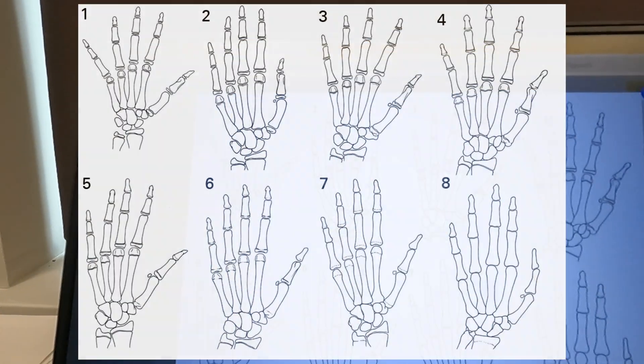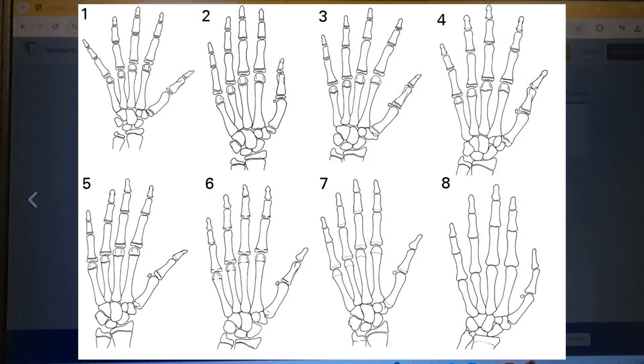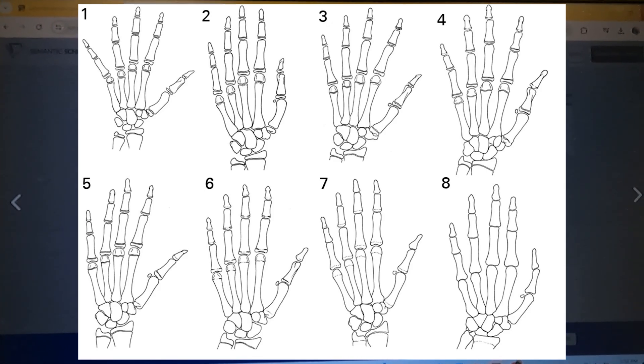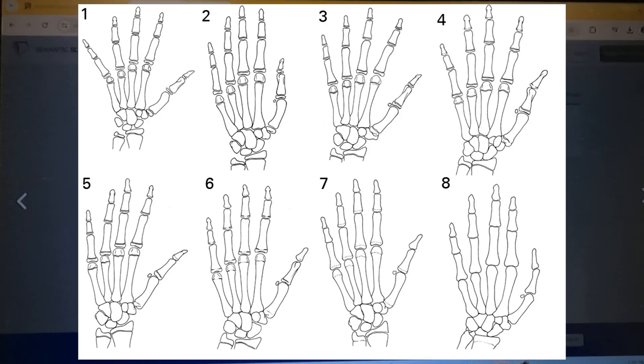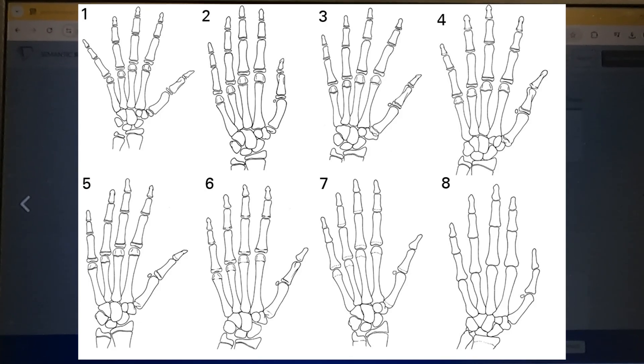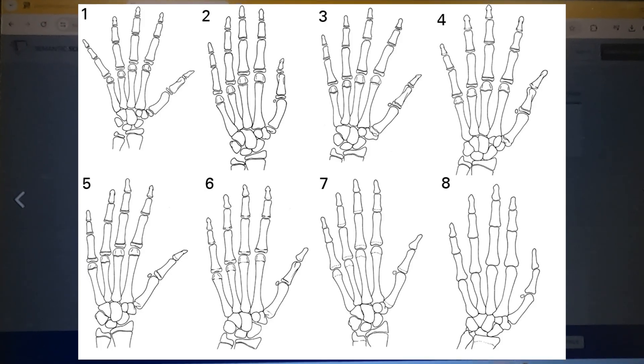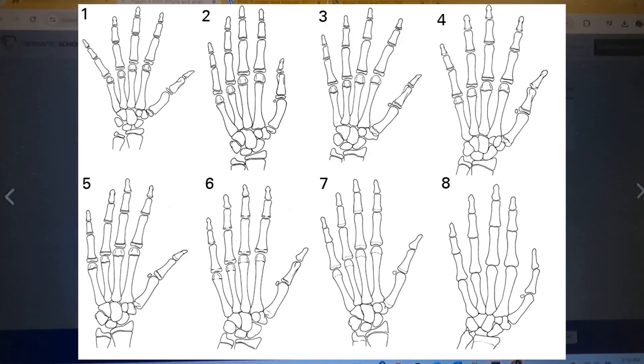We're going to talk about that today and some of the different scales that are used — and potentially one that's better. What I have in front of me is a diagram depicting eight different stages of growth in the hand, and this is used to help determine what's called a Sanders score.